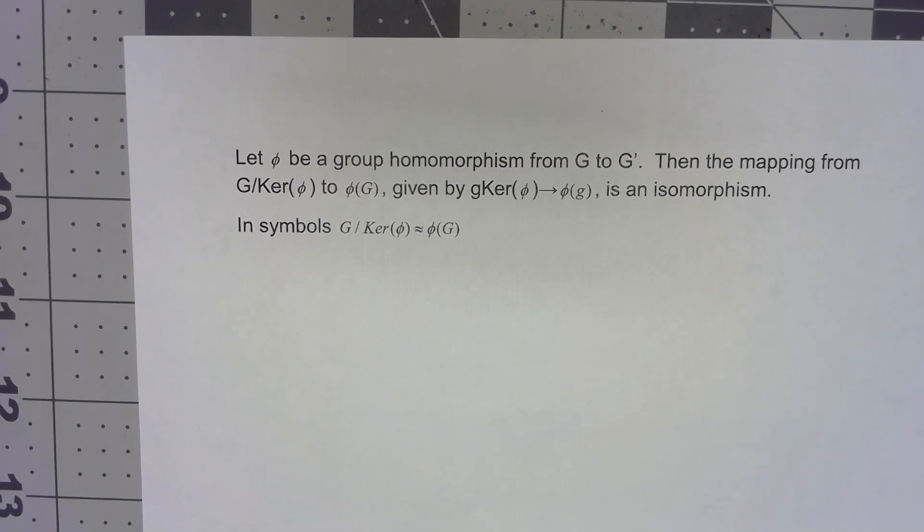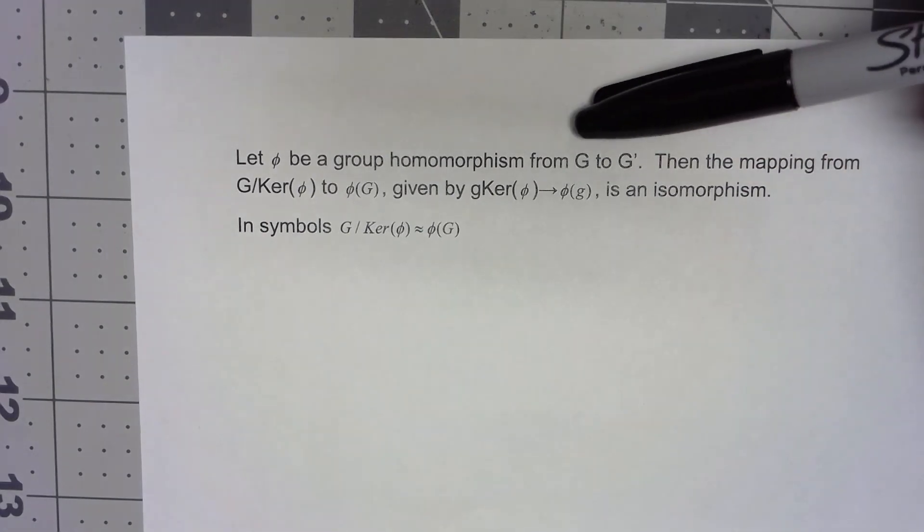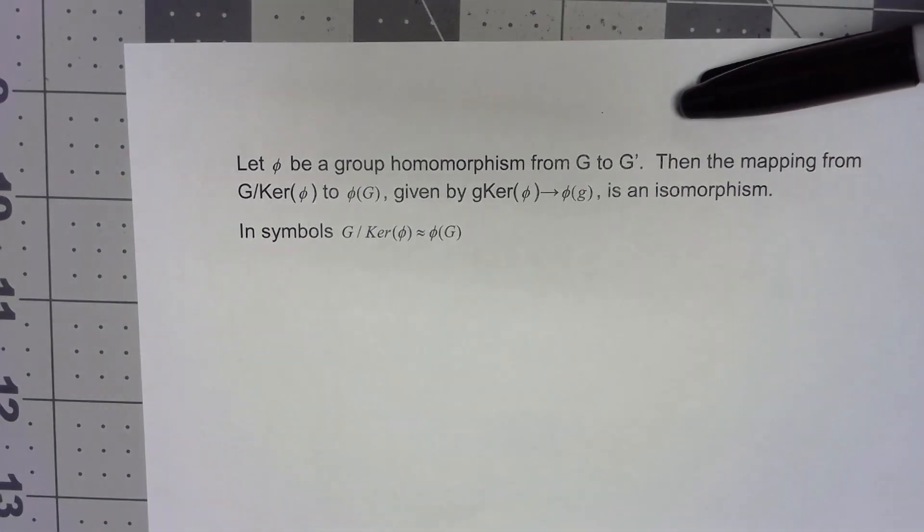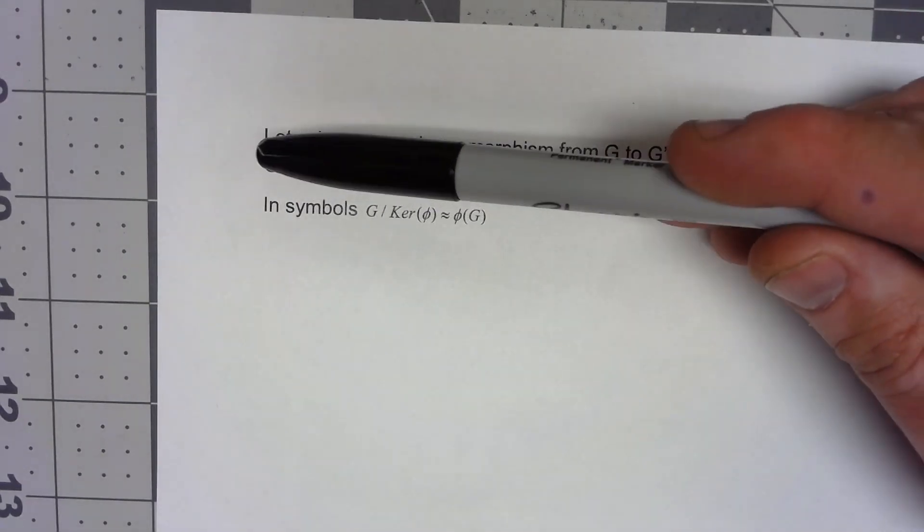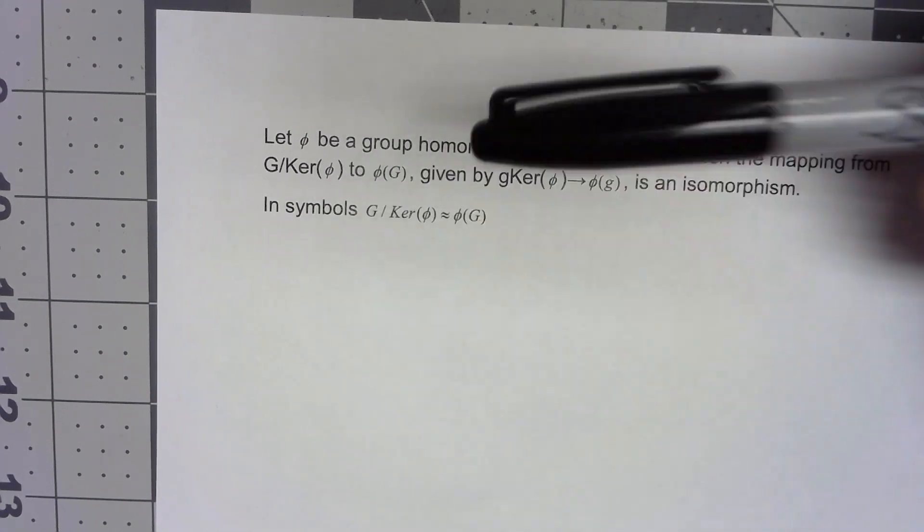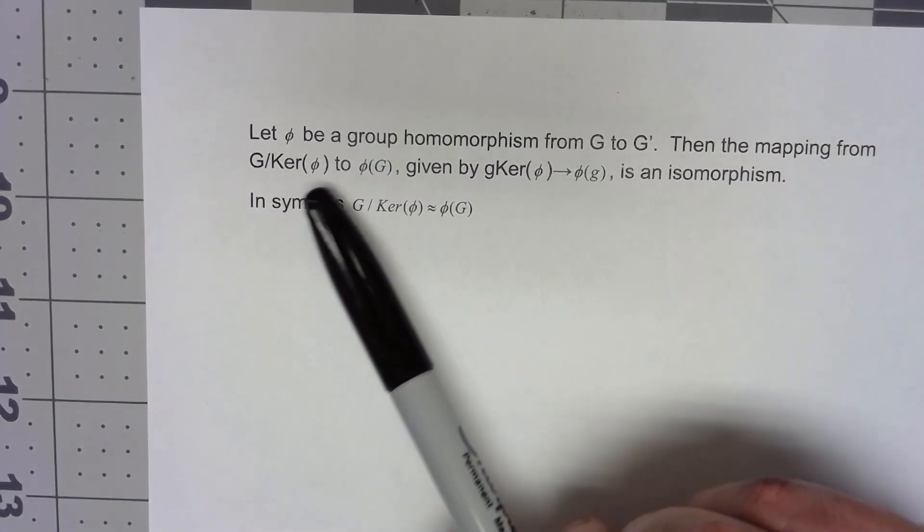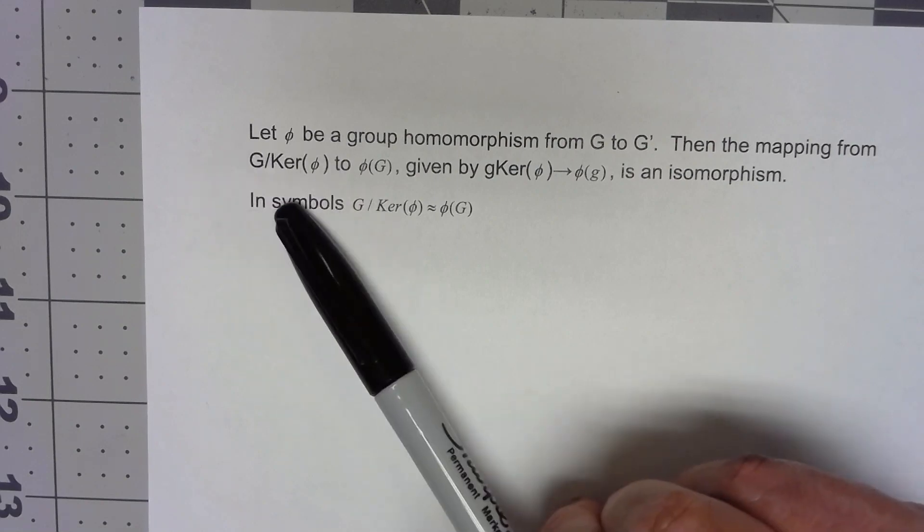Let's take a look at a hugely important theorem about homomorphisms. So we got a group homomorphism from G to G prime, then we create the factor group G mod the kernel of phi. Now I mentioned it earlier that the kernel of phi had to be a normal subgroup, so this makes perfect sense.